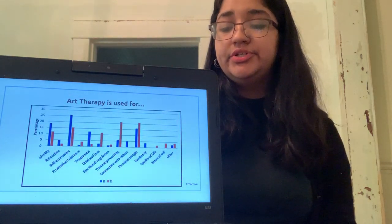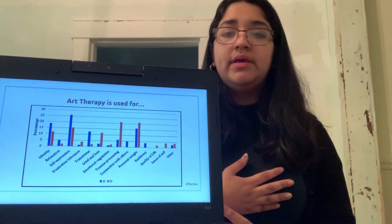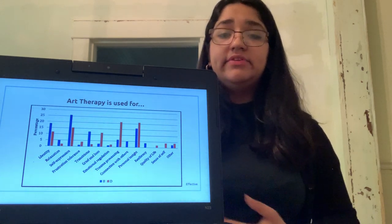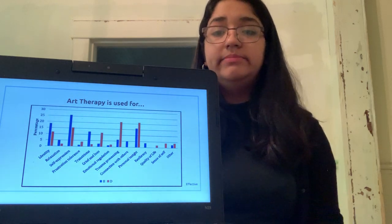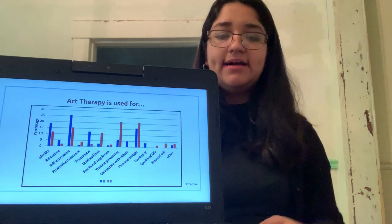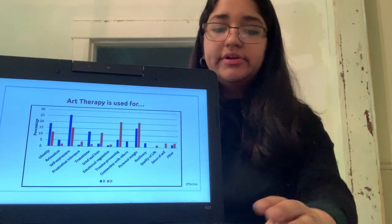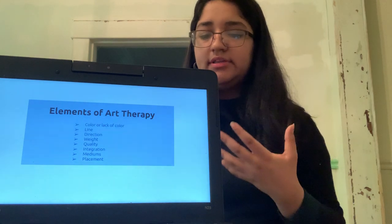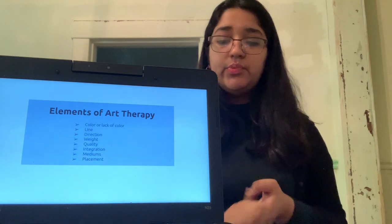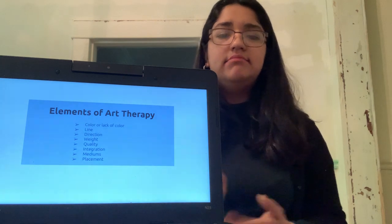This is a graph that shows all the different ways that art has helped people. It has helped people with trauma, PTSD, all the different things you can think of. It has helped a lot of people and I think if we pick it apart, we can find how it has and how we can use it to help connect each other again. The elements to art therapy are color or the lack of color, lines, their direction, weight, quality, the integration, mediums, and lastly, placement.